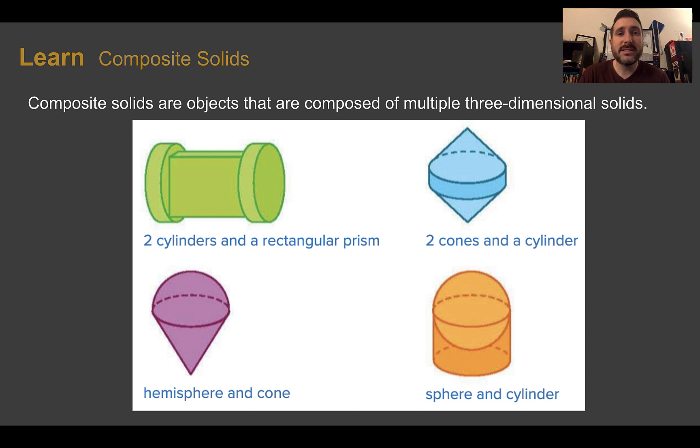Let's learn composite solids. A composite solid is an object that's composed of multiple three-dimensional solids. We can see here, in our first, we have two cylinders, one on each end, with a rectangular prism in the middle. If I wanted to find the volume of this, I could find the volume of each part and combine them together.